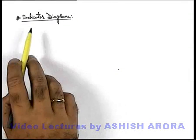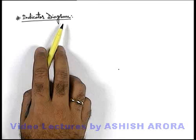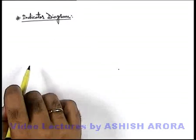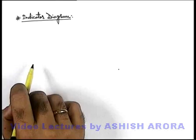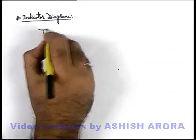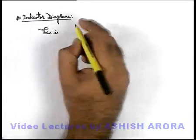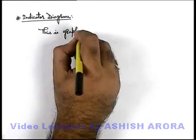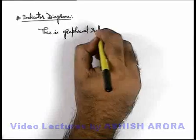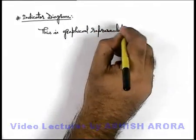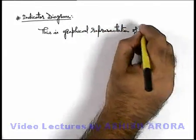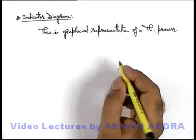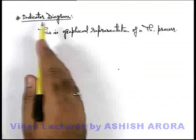The very next topic is indicator diagram, which is to be discussed in detail. This is quite an important section to understand thermodynamic processes. An indicator diagram is a graphical representation of a thermodynamic process. A thermodynamic process can be graphically plotted as an indicator diagram.